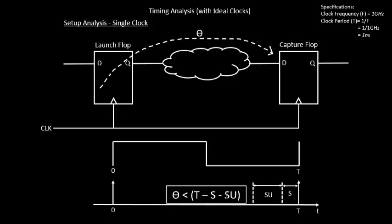SU is the setup uncertainty because we are doing setup timing analysis. Things are different for hold timing analysis because in that case only a single edge arrives at both the launch and capture flop, so it's more relaxed — we'll come to that later. But in setup timing analysis, different edges go to the launch and capture flops, so there are different jitter values for each, and the window looks bigger. As a result, combinational delay must be less than T minus setup time minus setup uncertainty.